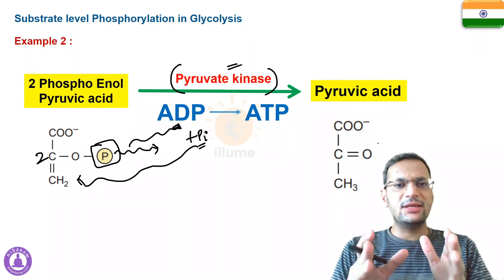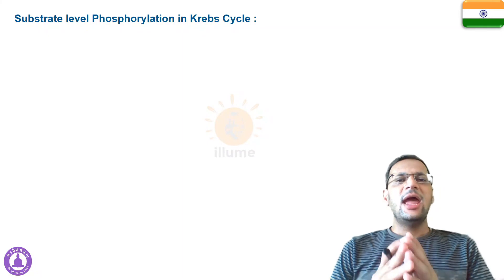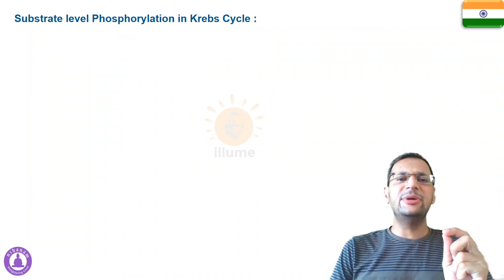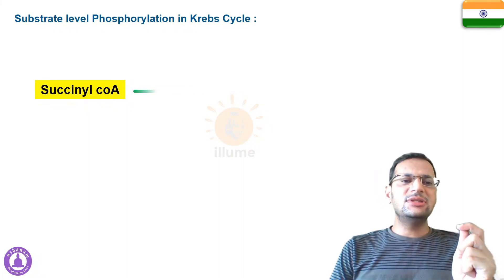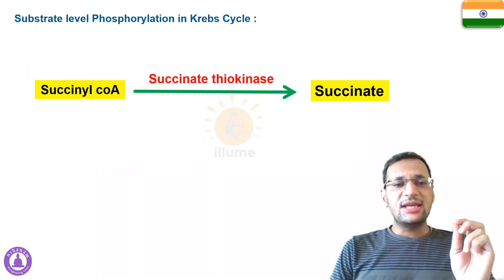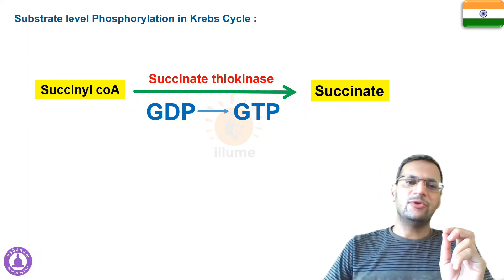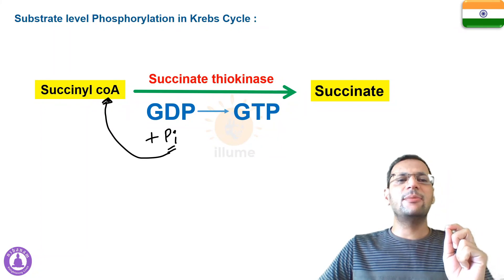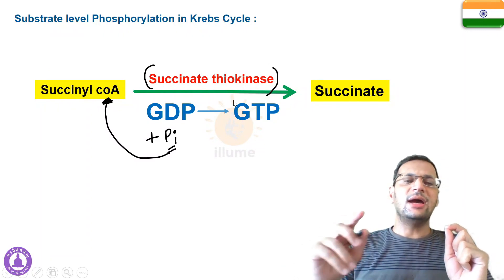Now the example from the Krebs cycle: in the entire Krebs cycle there is only a single step where ATP is formed. That step is the conversion of succinyl coenzyme A into succinic acid (succinate). This reaction is catalyzed by succinate thiokinase, and during it a GDP molecule is converted into GTP (guanosine triphosphate). The inorganic phosphate is derived from the substrate, making this a substrate level phosphorylation.